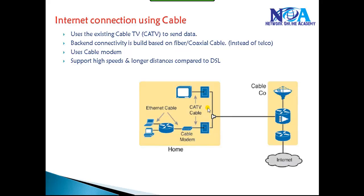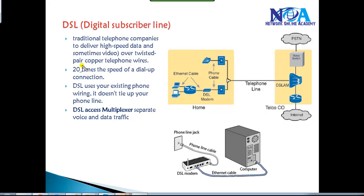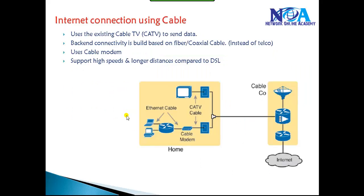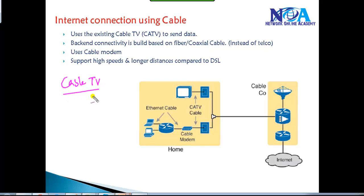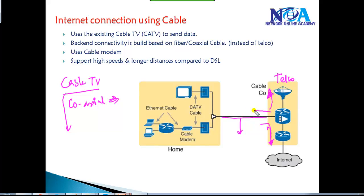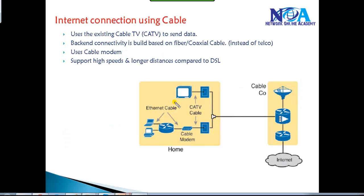DSL does support high speed data transfer rates, but not as high as cable operators. Cable modems are another way to connect to the internet. Cable TV operators use coaxial cable to provide cable TV connections to homes, and the same existing coaxial cable network is now also used to provide internet access — just like telecom lines use existing telephone lines for DSL.